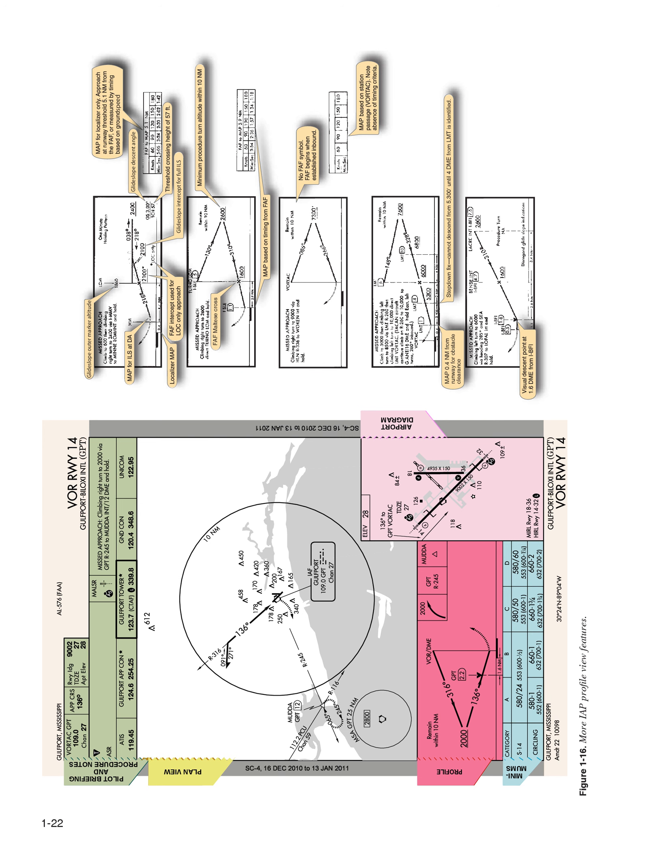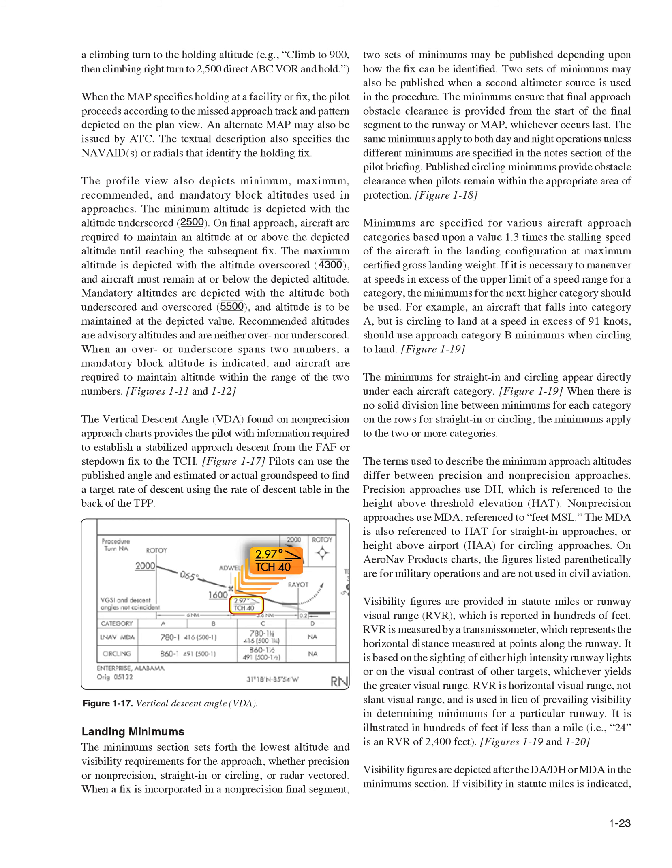When the MAP specifies holding at a facility or fix, the pilot proceeds according to the missed approach track and pattern depicted on the plan view. An alternate MAP may also be issued by ATC. The textual description also specifies the NAVAIDs or radials that identify the holding fix. The profile view also depicts minimum, maximum, recommended, and mandatory block altitudes used in approaches.